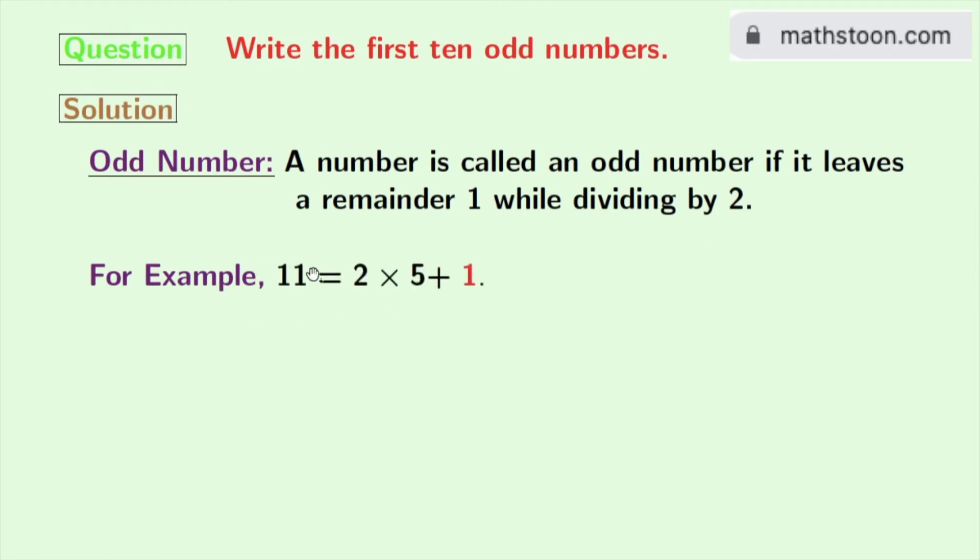If we take 11, then we get this equal to 2 times 5 plus 1. Here 1 is the remainder. So, according to this definition, we can call 11 an odd number.